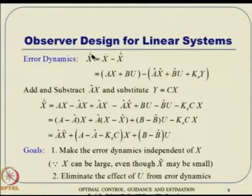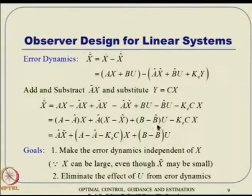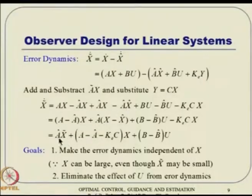Now we talk about error dynamics. x-tilde-dot equals x-dot minus x-hat-dot. x-dot is Ax plus Bu, and x-hat-dot is the observer expression we are proposing. Then we add and subtract y terms, substitute y equals Cx, and carry out the algebra. It turns out that the expression contains A-hat times x-tilde plus additional terms. We want the error dynamics x-tilde-dot to be a function of x-tilde only — regardless of whether x or u are large or small. For that reason, we want to make certain coefficients zero.